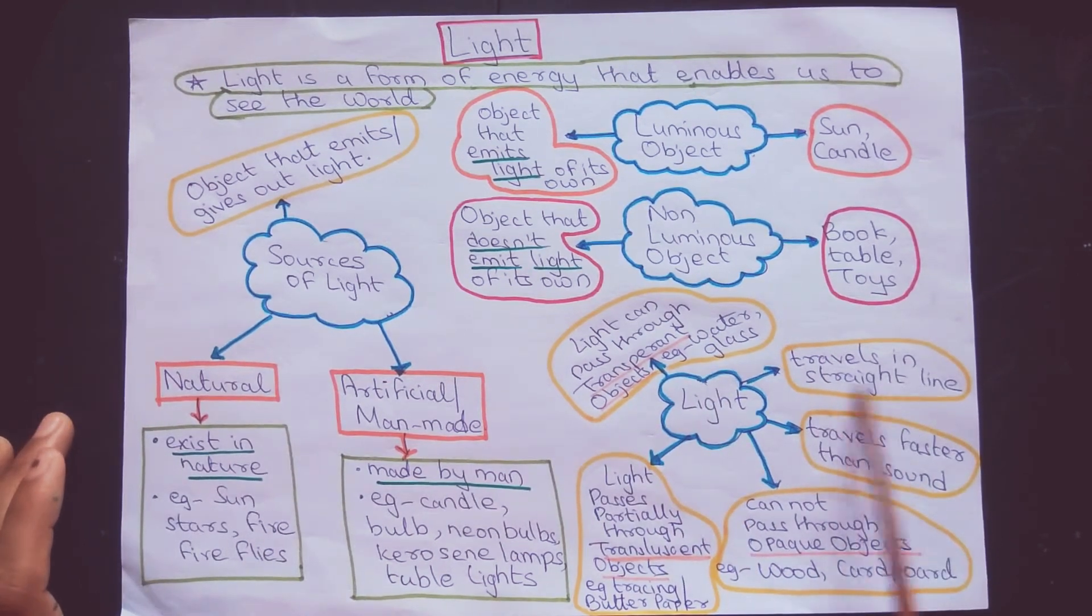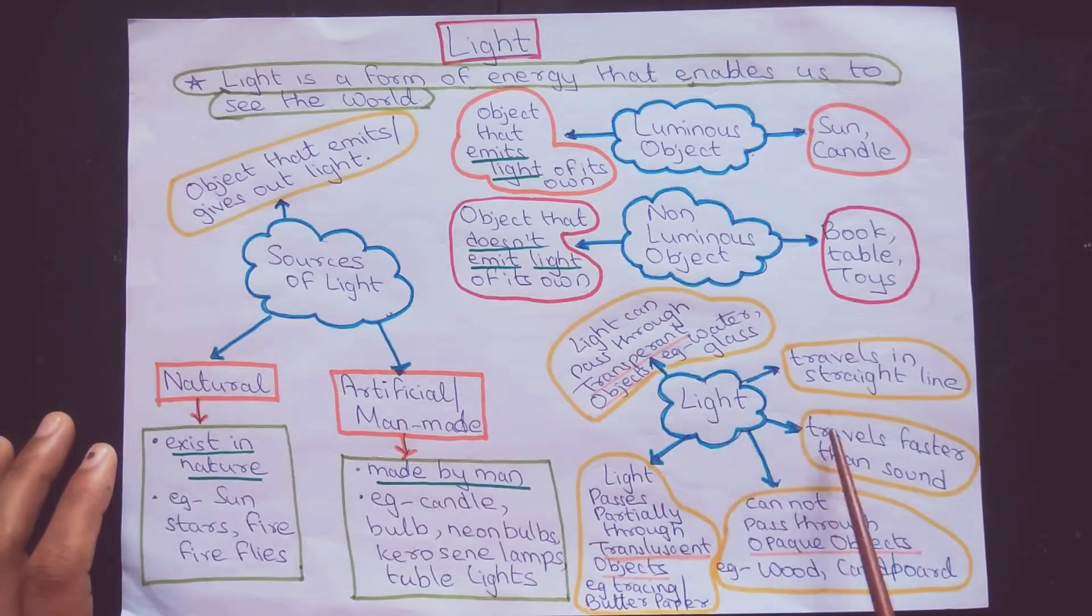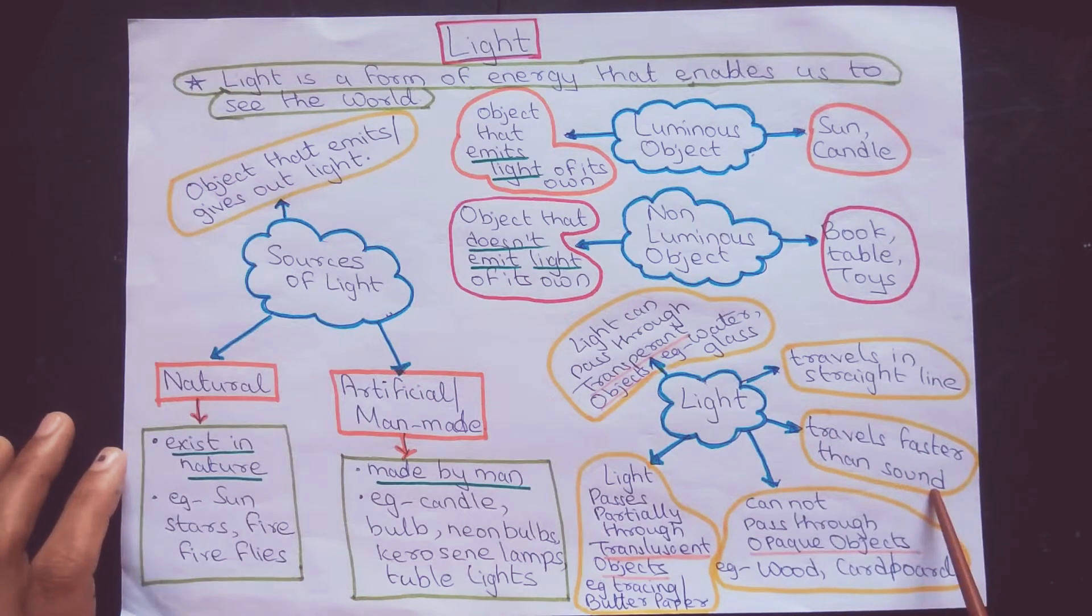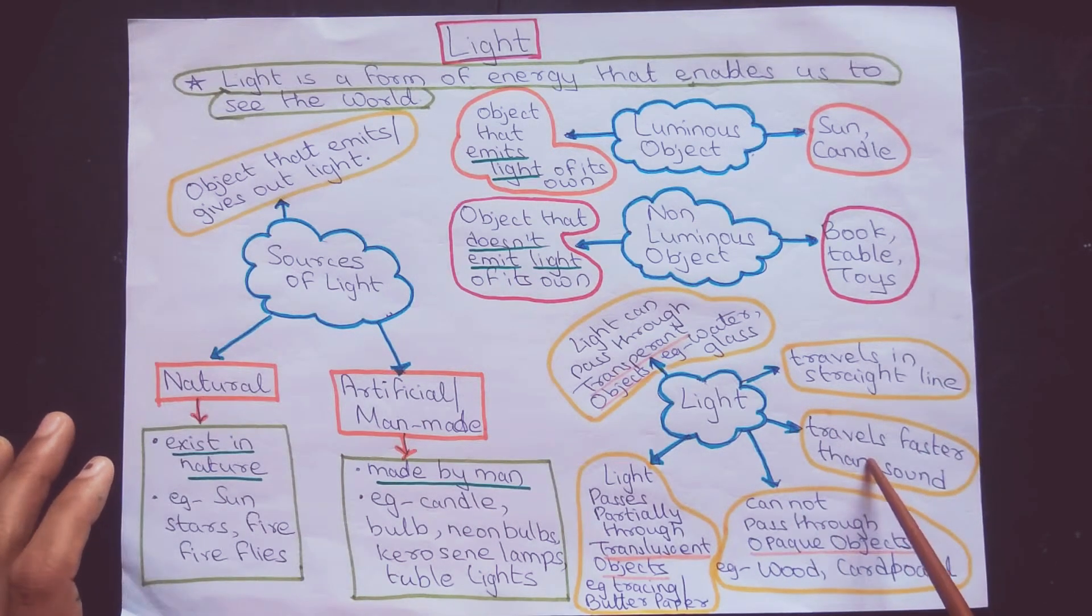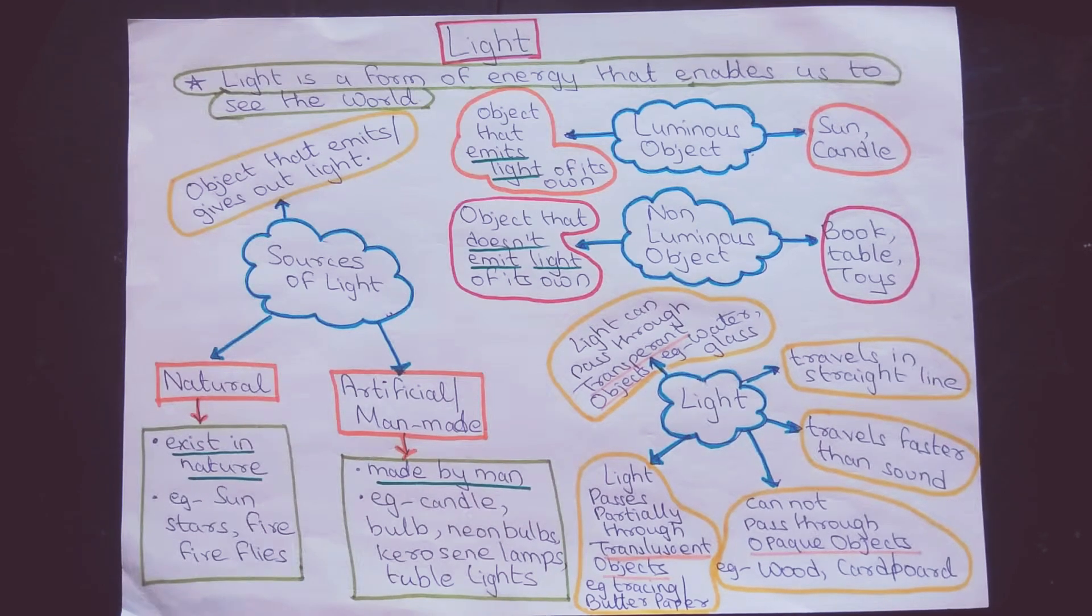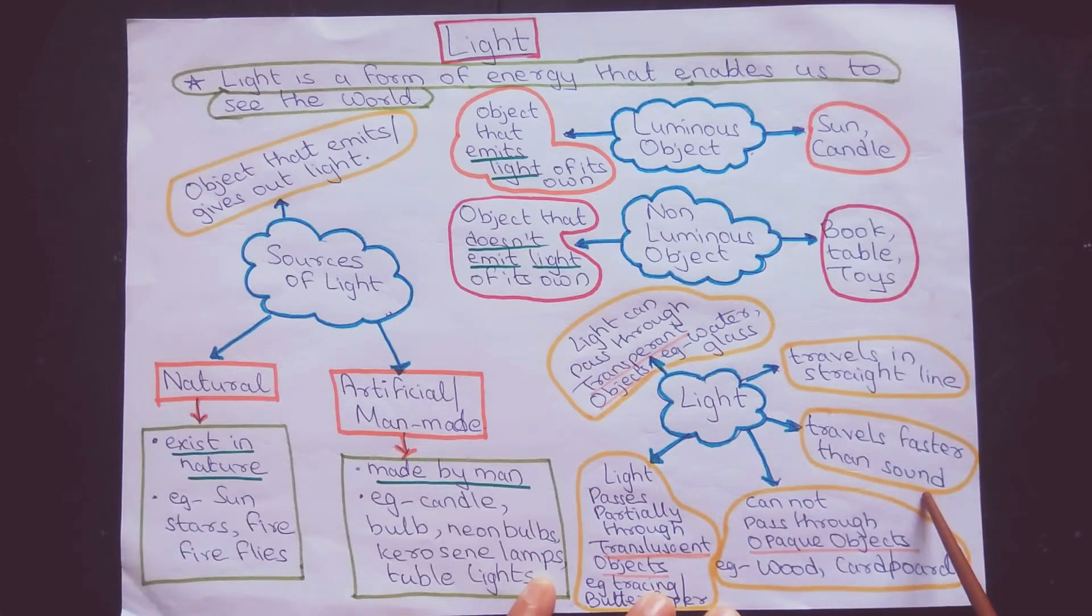Light travels in a straight line. Light travels faster than sound. That's why, whenever there is a thunderstorm and rain in rainy season, we can see the thunderstorm first and later on we can hear the rain. That is the reason why light travels faster than sound.